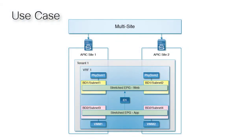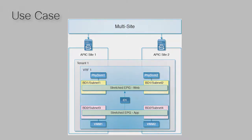This Cisco ACI multi-site use case provides endpoint groups stretched across multiple sites. A stretched EPG is defined as an endpoint group that expands across multiple sites where the underlying networking, site locale, and bridge domain can be distinct. In this use case, only the EPGs are stretched between sites. Each EPG has their own local BD subnet while the contract is also shared between sites.